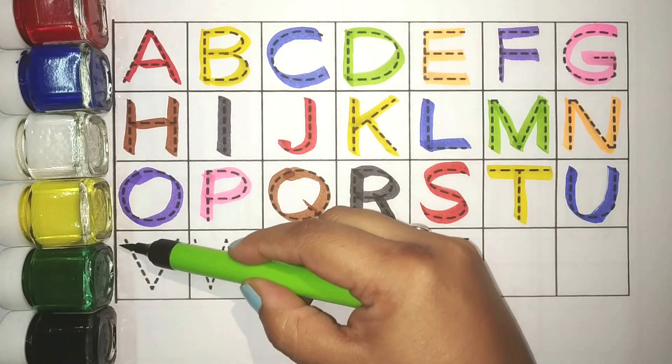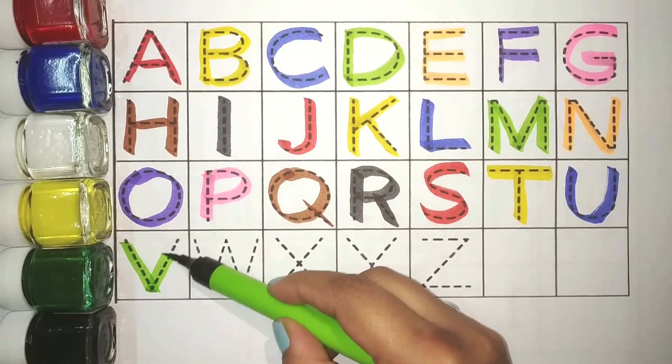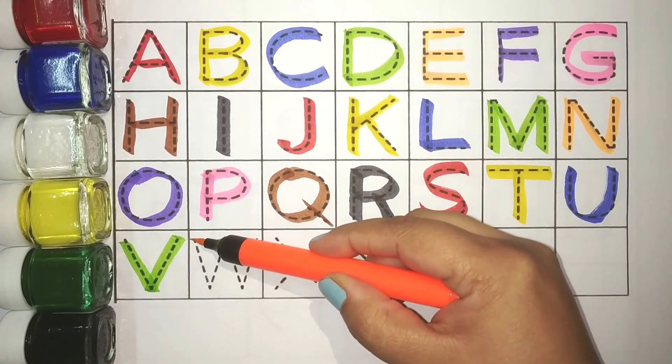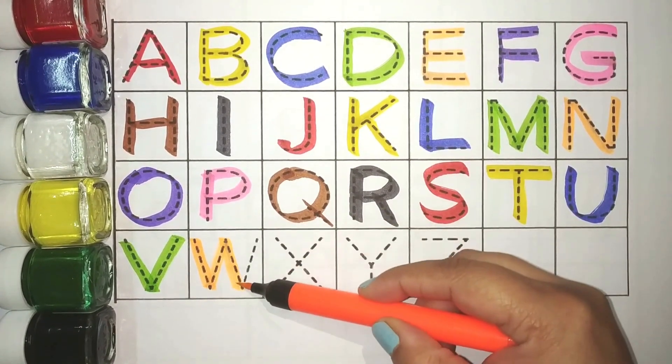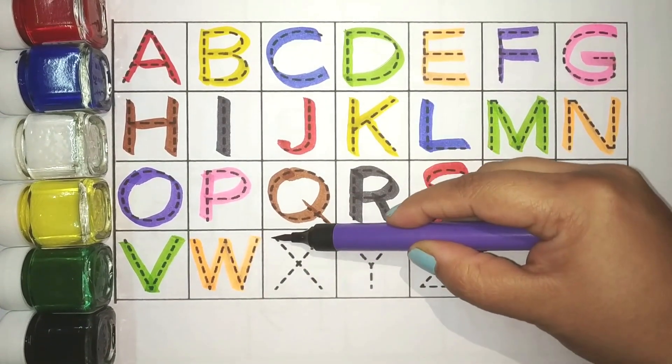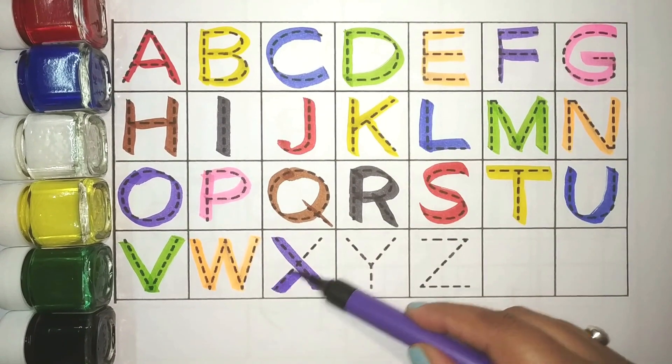Green, V. V for vest. Orange, W. W for water. Purple, X. X for express tree.